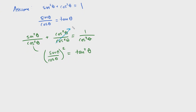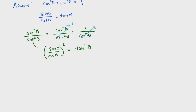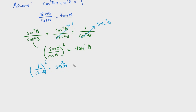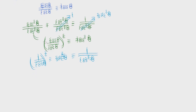Cosine squared theta over cosine squared theta simply goes to one — anything divided by itself is just one. And one over cosine squared theta is actually just secant squared theta, because we know that one over cosine theta is just secant theta, and squaring that gives us secant squared theta. So that's also written as secant squared. Once we know that, we can rewrite this equation.